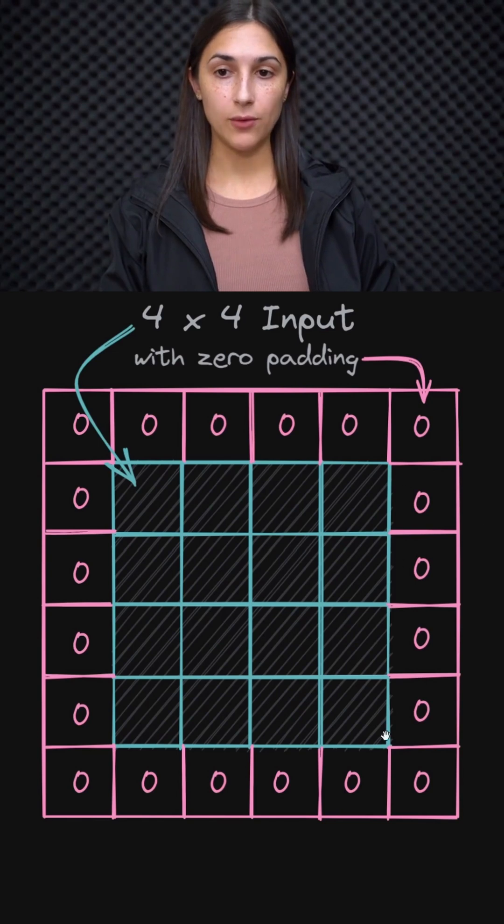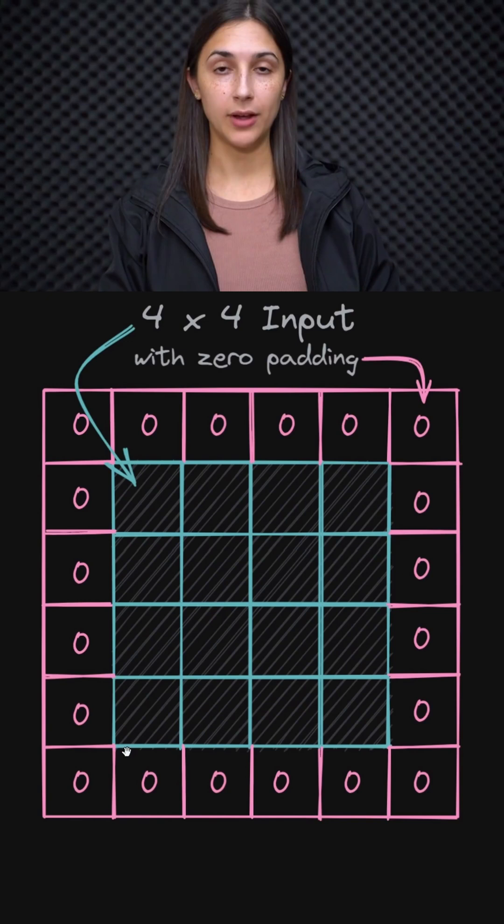This is our 4x4 input from earlier that resulted in a 2x2 output after being convolved by a 3x3 filter. But now this image has become 6x6 with the inclusion of zero padding around the edges.